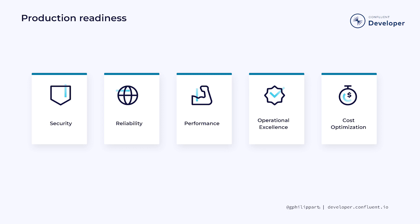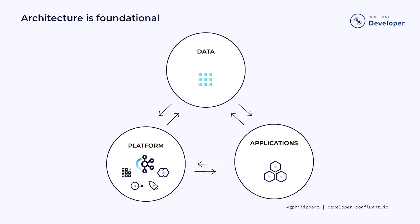But how do we achieve those qualities? The first foundation to build is architecture. In the advanced streaming world, the architecture has three main pillars: data, platform, and applications.